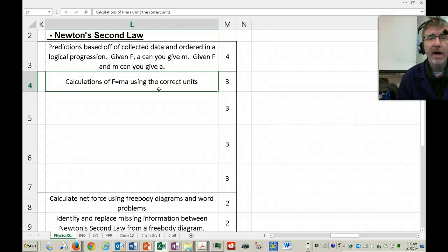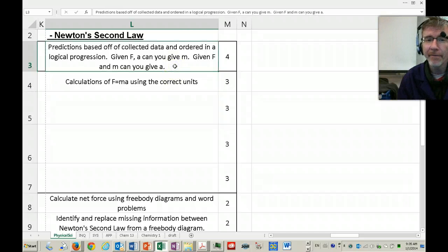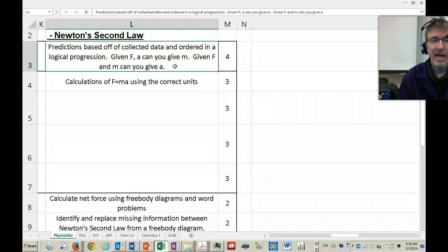Then level 4. To do above 3.0 performance on this standard, you need to, given an F and an A, can you give me the M? So divide F by A to give me the mass. And given a force F and a mass M, can you give me the A? So F divided by M equals A.